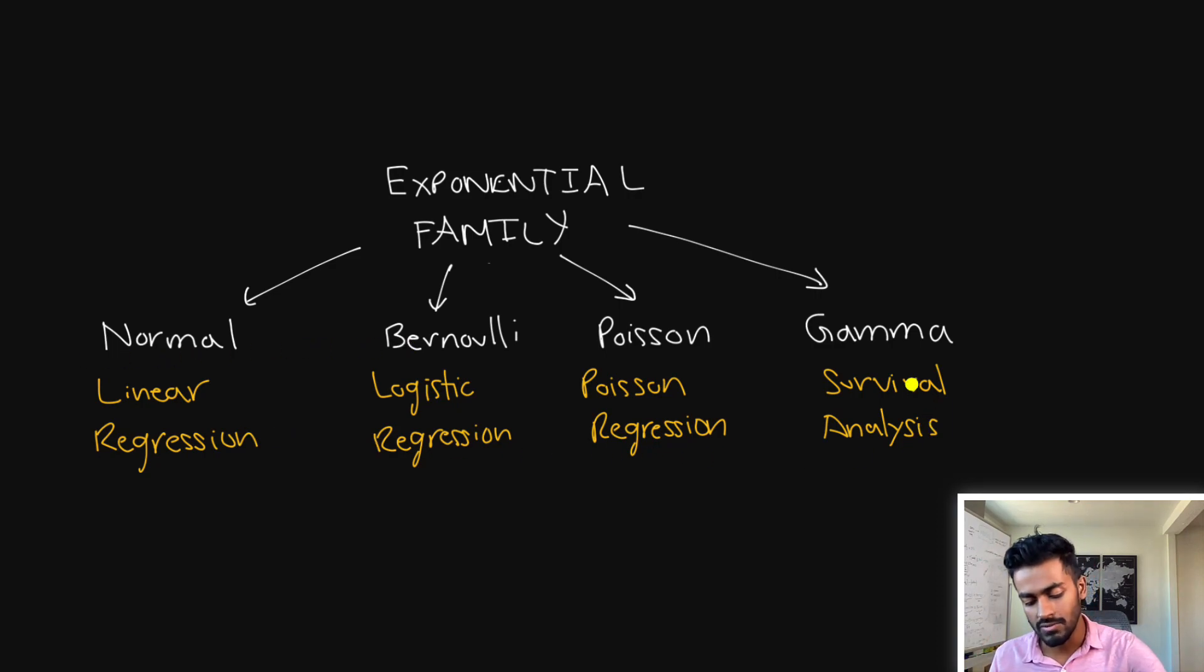So all of these will essentially perform some transformation on the typical linear equation to get some nonlinear form in order to solve different types of problems. So for example, linear regression is great for regression-based problems, logistic regression for classification, Poisson can be for modeling counts, and survival analysis can be for modeling time till death.